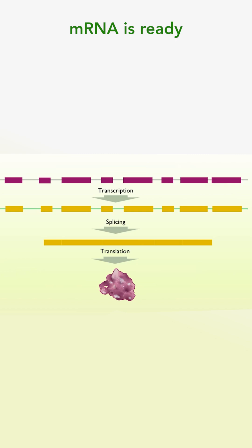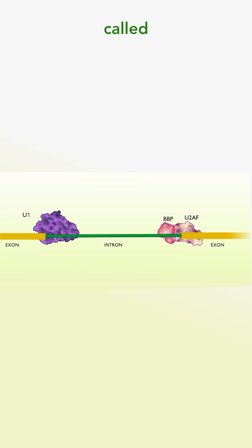This mature mRNA is ready to be translated into protein. It is carried out by the large molecular machine called spliceosome, which is made up of five small nuclear ribonucleoproteins, SNRNPs: U1, U2, U4, U5, and U6.